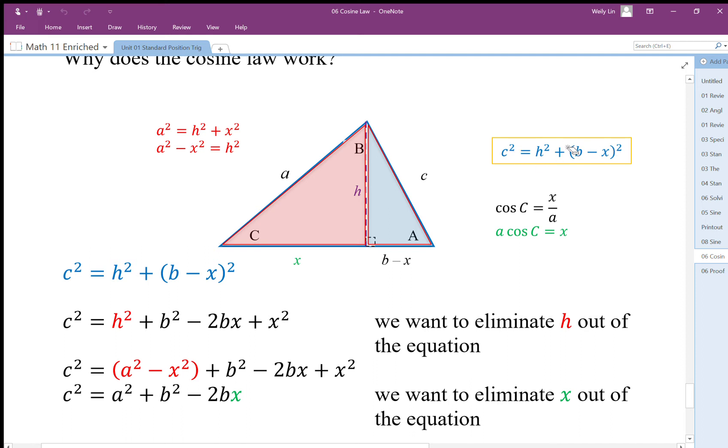We're also going to evaluate this x piece by saying that cosine C is going to be this x divided by a. So we're going to say that a cos C equals this x. We're going to keep it as x for now and introduce the a cos C later on.